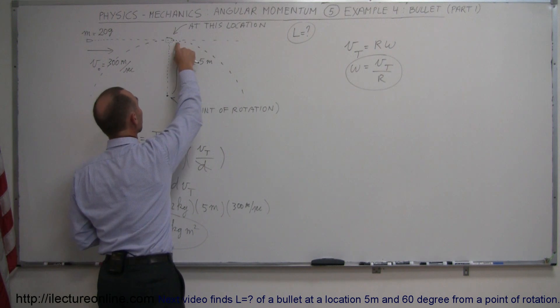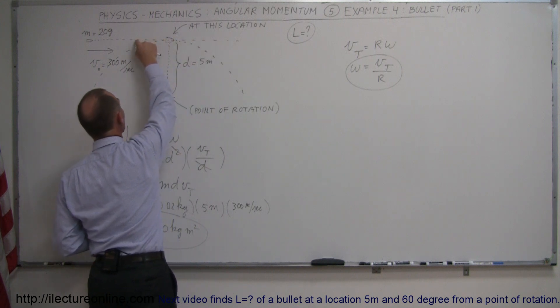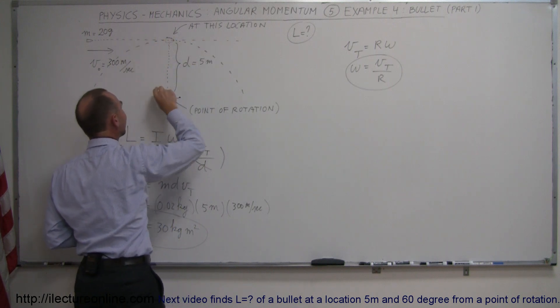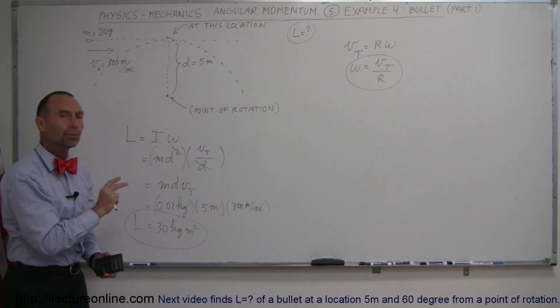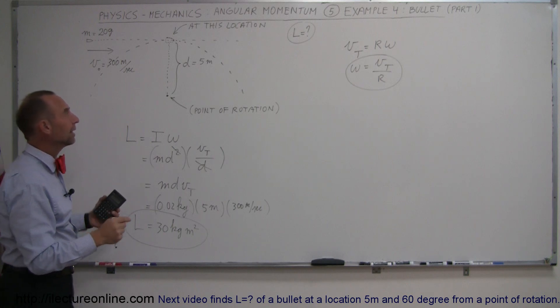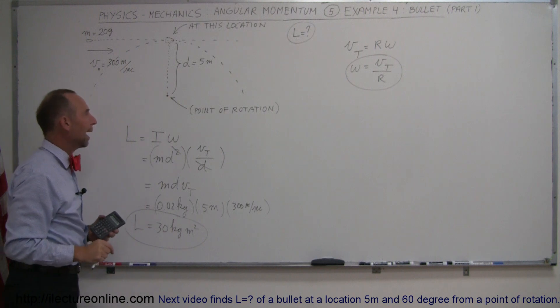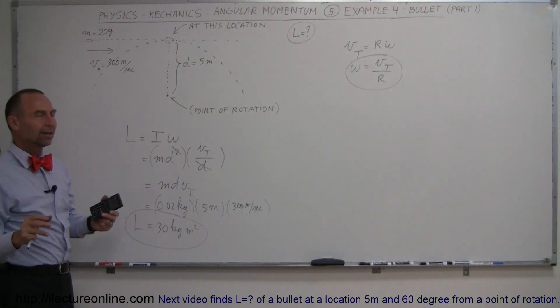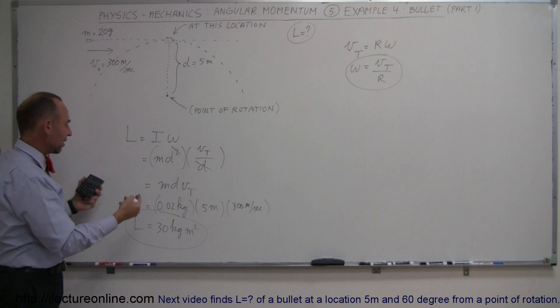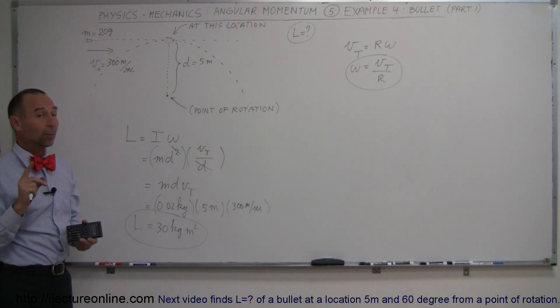Now notice that if the bullet is a little bit further along, or not quite at that location, if it's in a different location, then the angular momentum wouldn't be that, it would be something different because then it wouldn't be at that assumed rotational motion path. Now you say, well, that's all kind of bogus because it's traveling a straight line. How can you tell me that it has angular momentum?